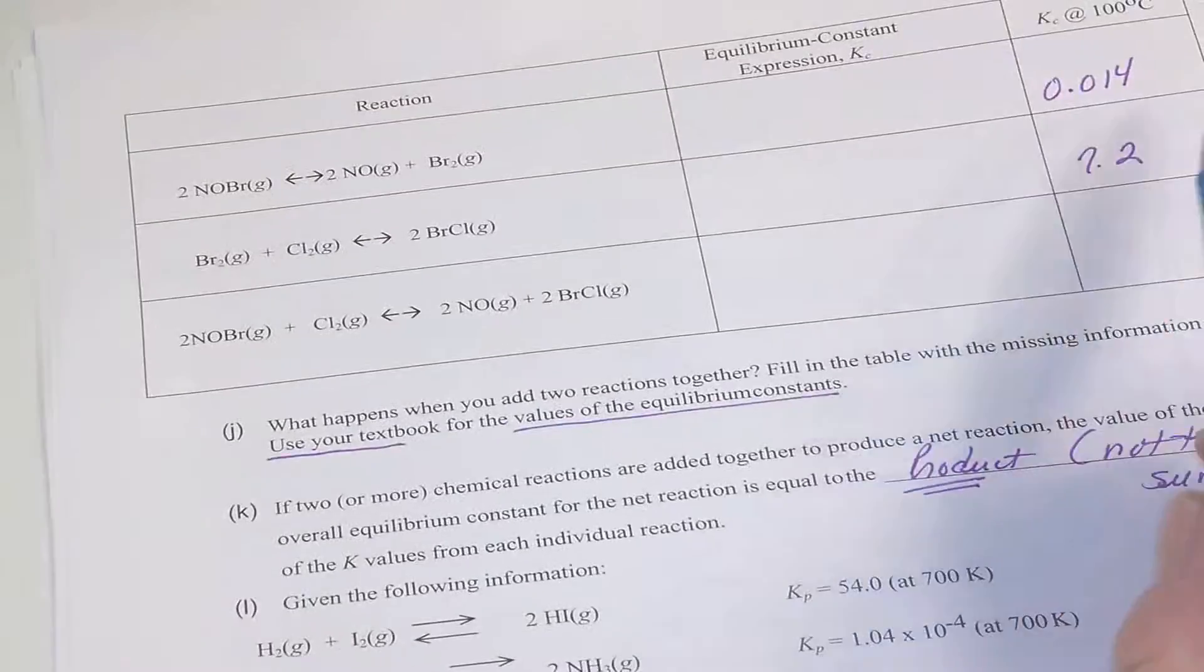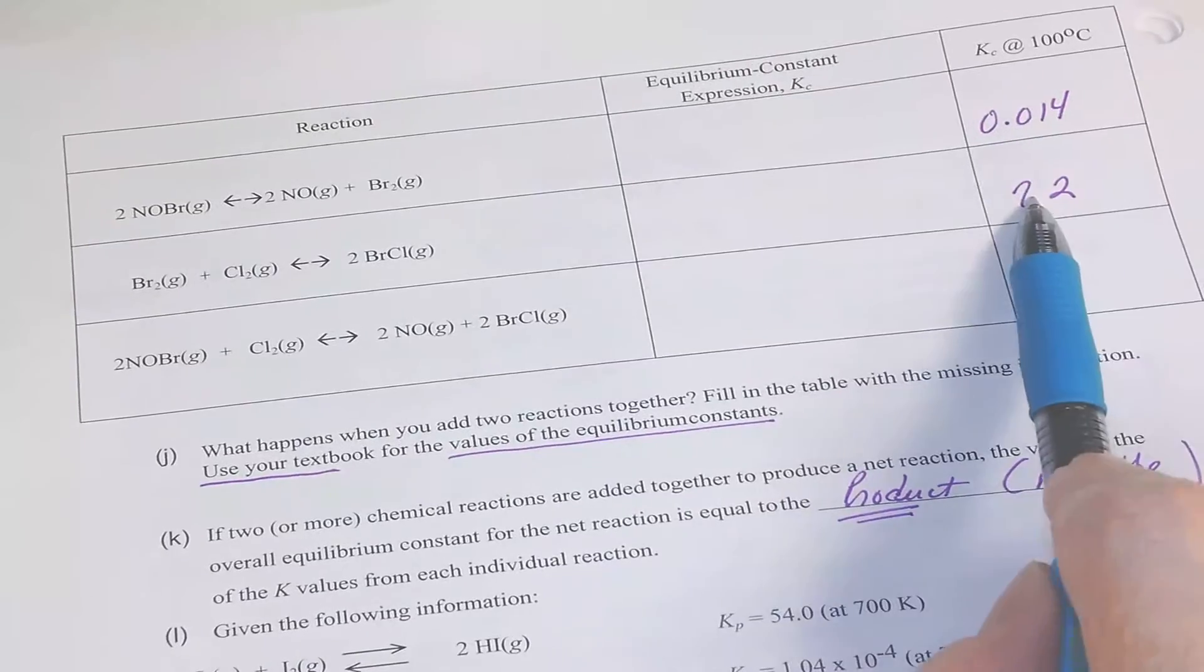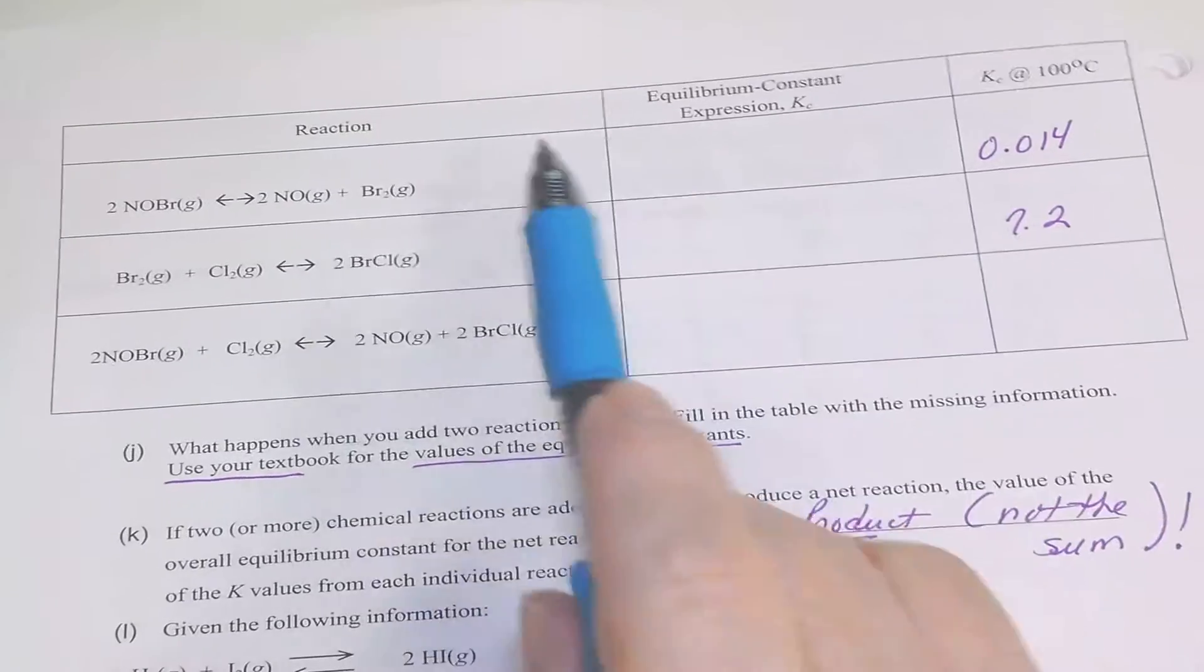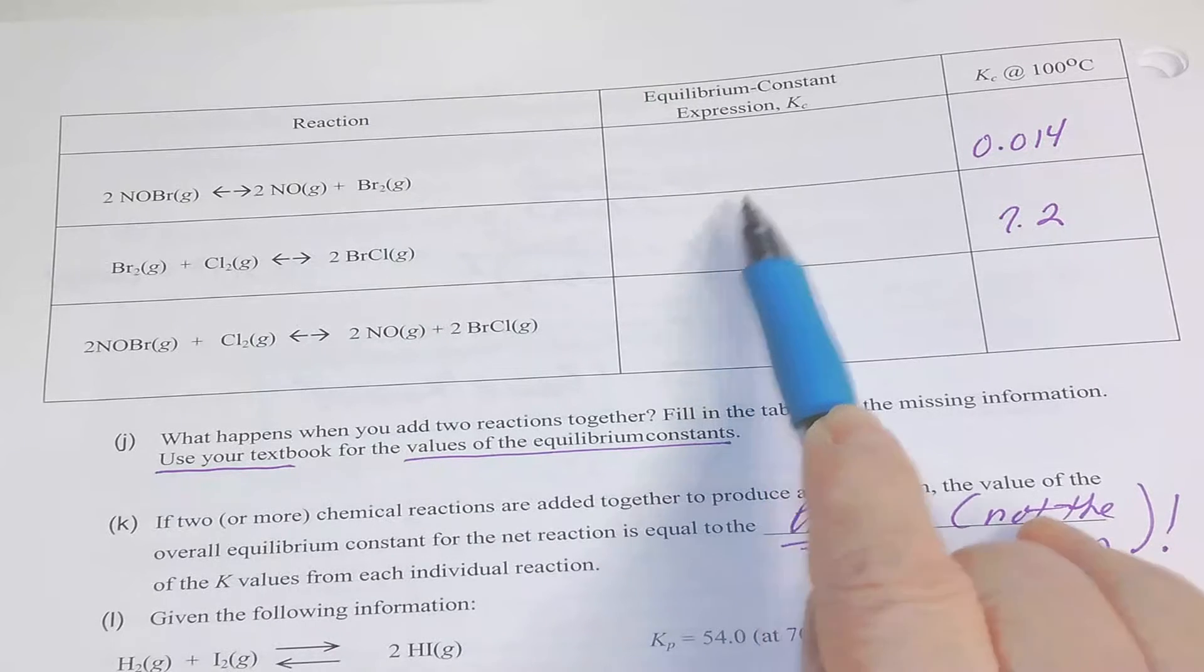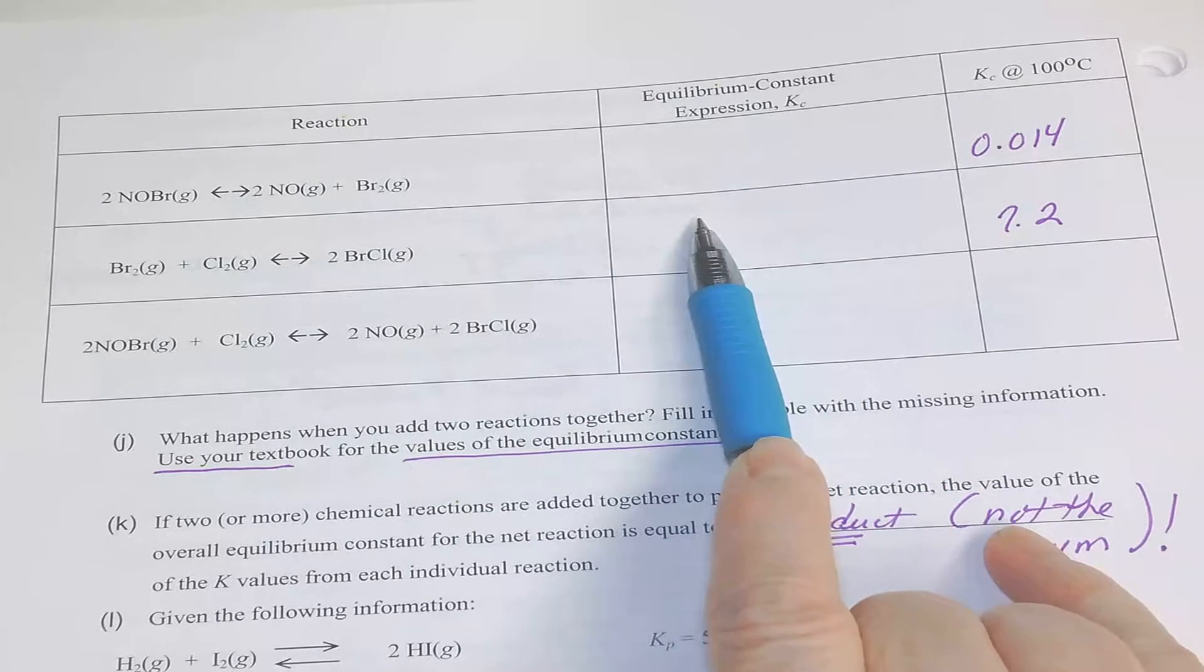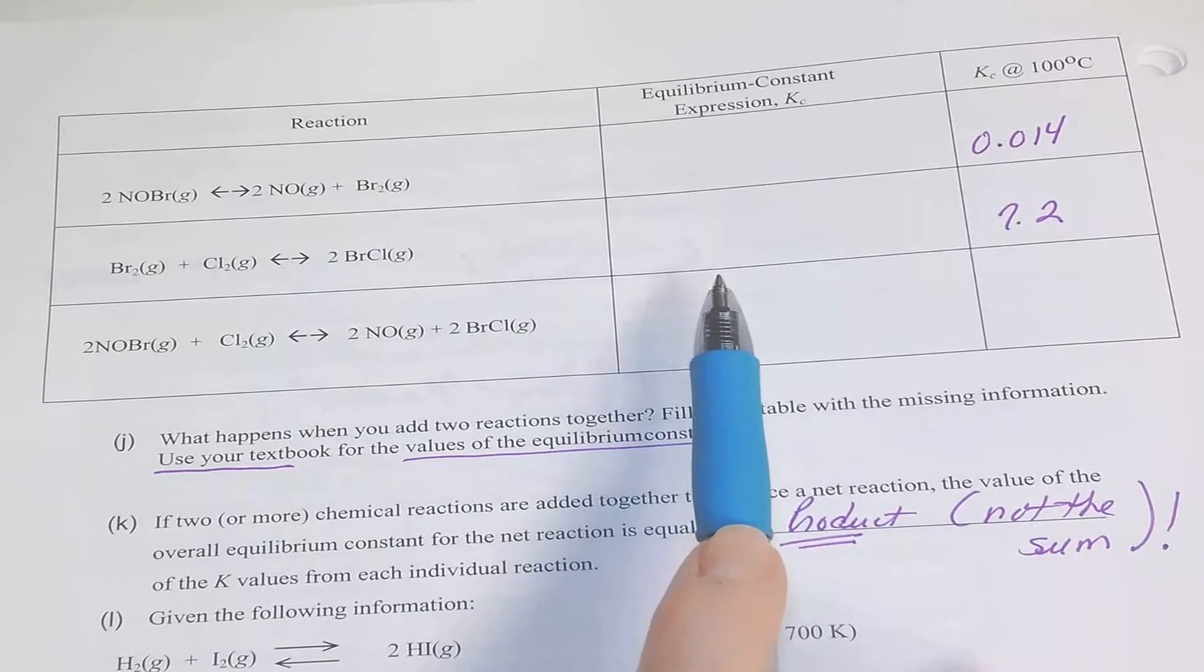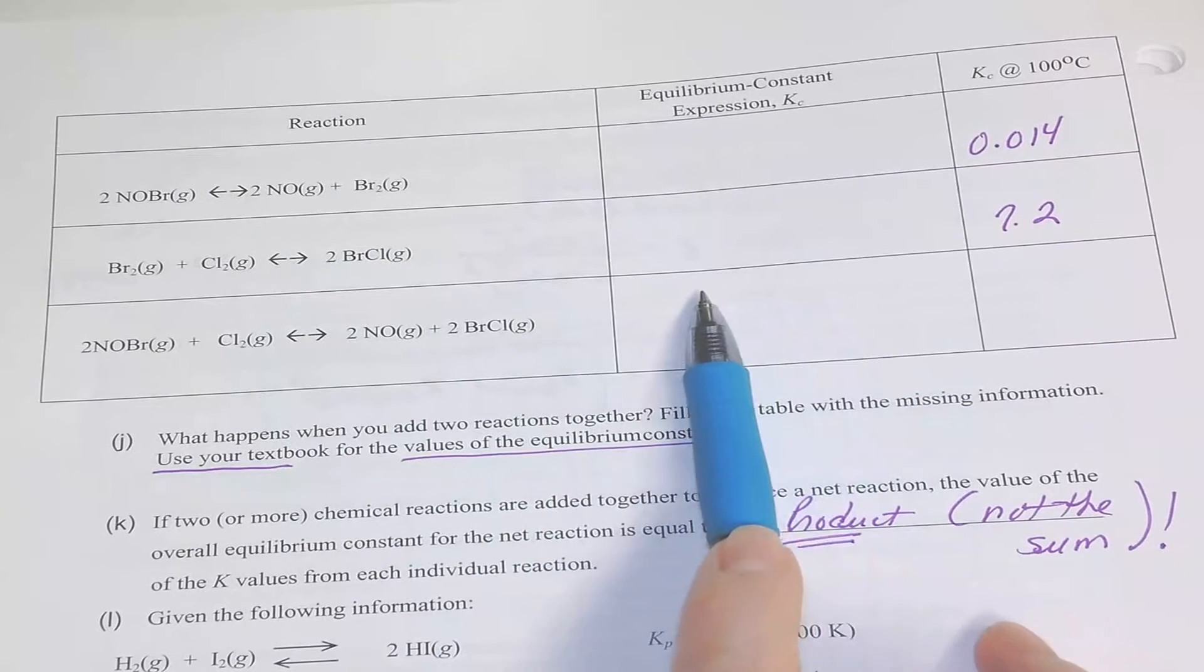So here I have given you two K values. Write your equilibrium expressions. And see if you can take these two equations and add them up to equal this equation and write its K expression.